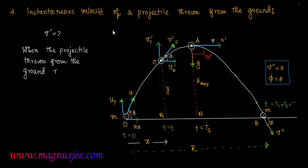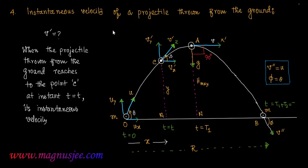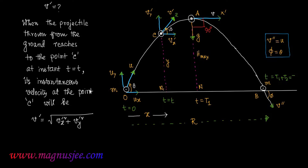When the projectile thrown from the ground reaches the intermediate point C at the instant t equals t second, its instantaneous velocity at point C will be v prime equal to the square root of Vx prime squared plus Vy prime squared. That is the instantaneous velocity of the projectile at point C, which is Equation 1. V prime is the instantaneous velocity of the projectile at point C at instant t equals t second.